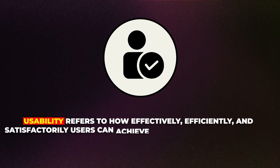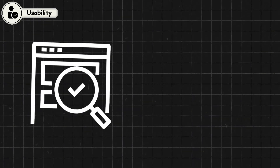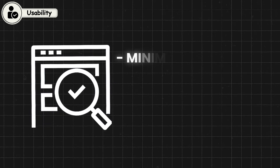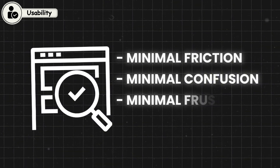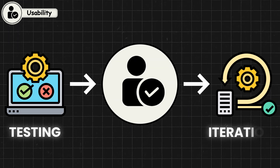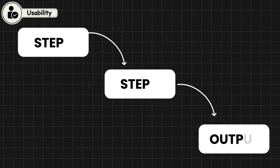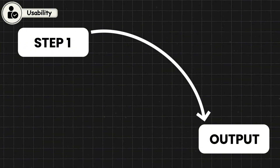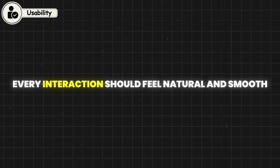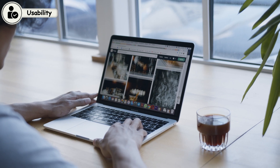Usability refers to how effectively, efficiently, and satisfactorily users can achieve their goals using a product. A usable design is one where users can complete tasks with minimal friction, confusion, or frustration. Usability is often evaluated through testing and iteration, refining the interface until it's easy and intuitive for users to navigate. A key aspect of usability is reducing the number of actions or steps it takes to achieve a task — every interaction should feel natural and smooth, allowing the user to remain focused on their goals rather than the mechanics of the interface.